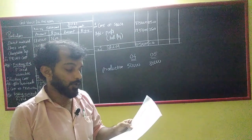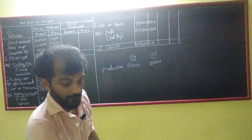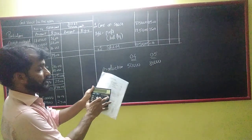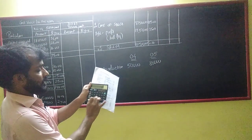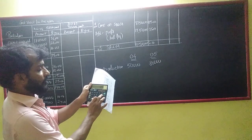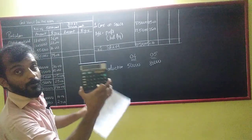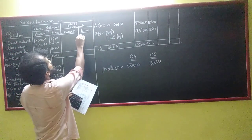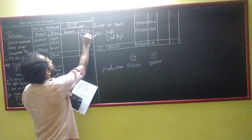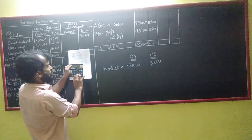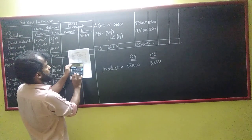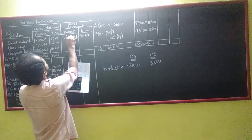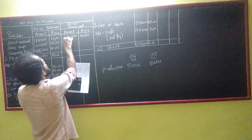Direct material cost per unit will increase by 12.5%. My direct material rate was 36, so 36 plus 12.5% gives 40.50 per unit. Into 80,000 units, the direct material amount comes to 32,40,000. Simple.